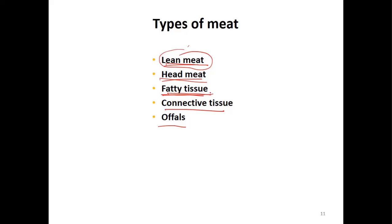But in fat, the most abundant component is fat. Connective tissue - what is the main protein in connective tissue? Collagen, good. Offals are the byproducts from slaughter, for example the skin, stomach, horns, and legs, and so on.